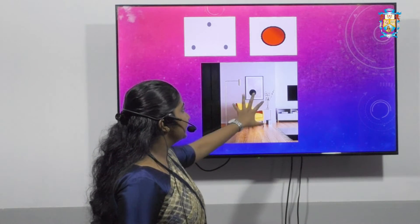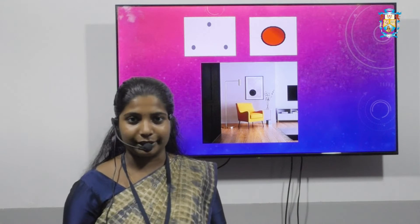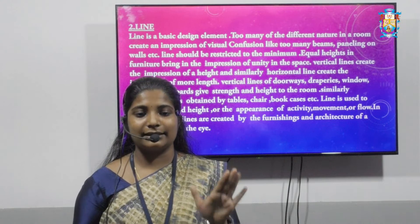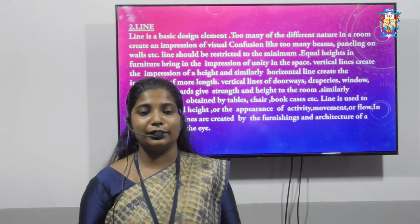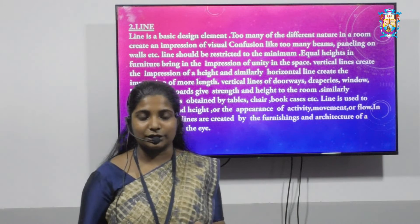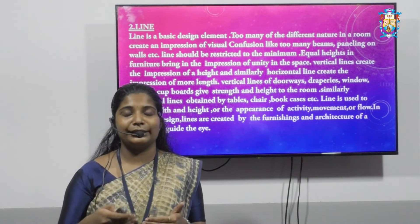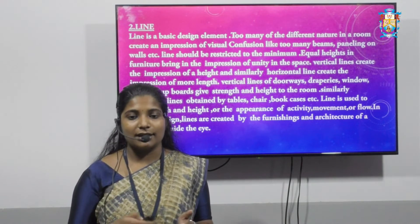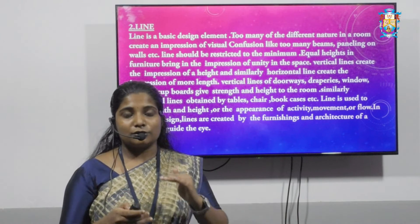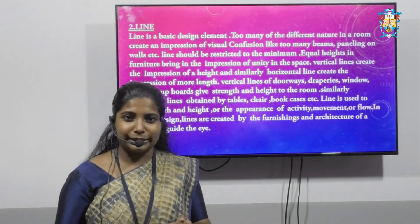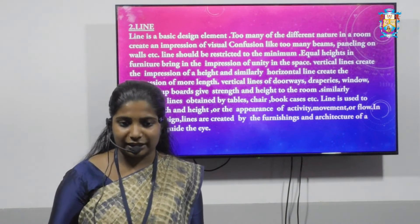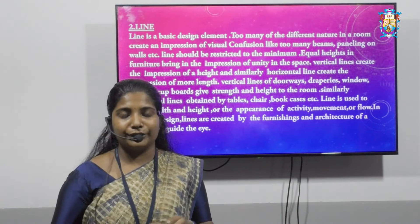The second element is line. Line is a basic design element. Too many different lines in a room create an impression of visual confusion — for example, too many beams or panels on a wall. Lines should be restricted to a minimum. Equal height in furniture brings an impression of unity in the space.